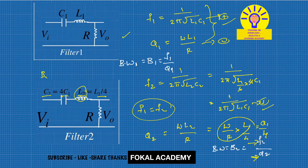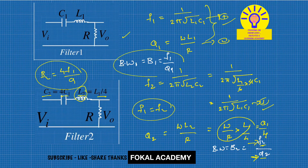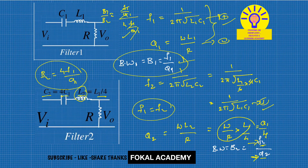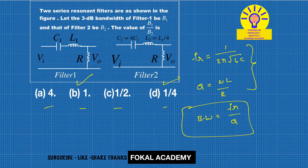Substituting into B2: B2 = F1 / (Q1/4) = 4F1 / Q1. Now dividing: B1/B2 = (F1/Q1) / (4F1/Q1). The F1 and Q1 terms cancel, giving B1/B2 = 1/4. Therefore, the bandwidth ratio is 1/4, which corresponds to option D — the correct answer for this problem.